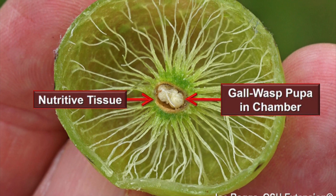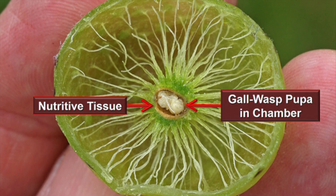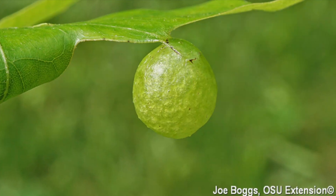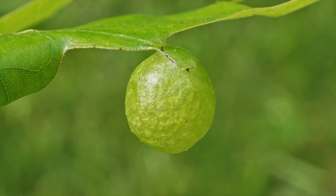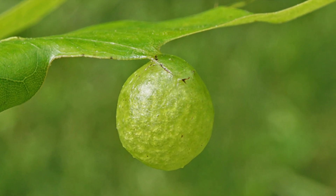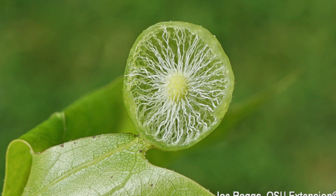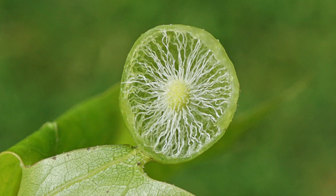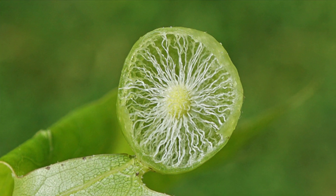The female wasp lays single eggs in the developing leaf buds or branches, leaflets, and leaf bases. The wasp larva then feeds on the gall tissue resulting from their secretions, which modify the oak bud into the gall. And now it doubles as a structure that protects the developing larva inside until they undergo metamorphosis.